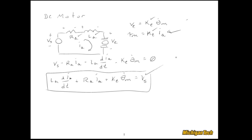Its input is the voltage source Vs, and its output is whatever you want to make it. But one of the things that happens is it creates a current inside the motor, and if the shaft is spinning, then there's a back EMF that opposes that input voltage to the tune of KE*theta_M dot.